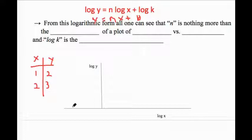That's what this form is telling us. The beauty of this is that the n is equivalent to the slope of that line.